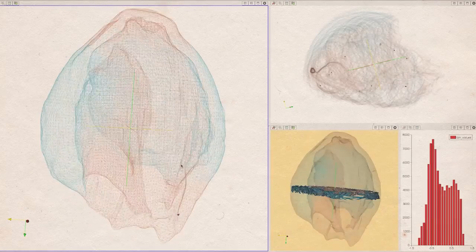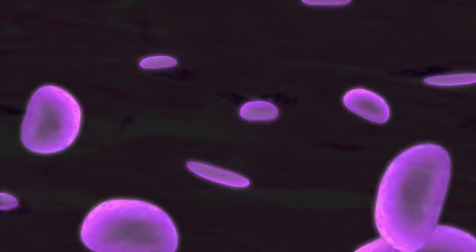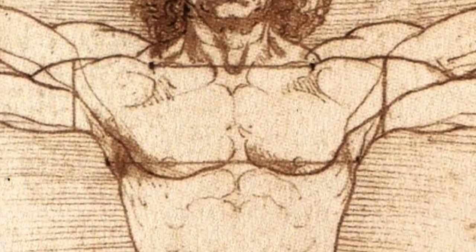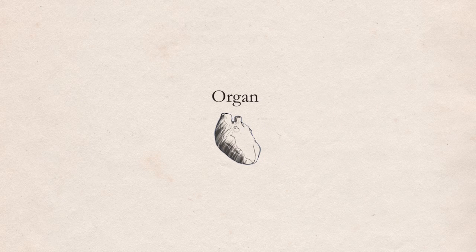A computational description of the heart requires information at very different scales in time and space, from the ions inside the cells or the muscular tissue that forms the organ and up to the whole individual. Because it is not practical to compute all the scales to the same level of detail, our cardiac model is based on the organ scale.